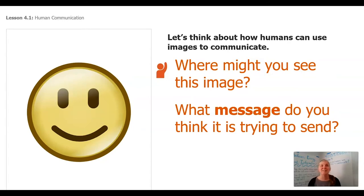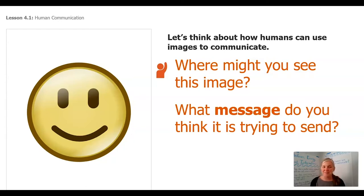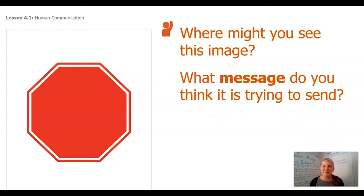Let's think about how humans can use images to communicate. Where might you see this image here? What message do you think it's trying to send to you? I think we all recognize this one — is it saying that it's happy? Is it saying that it's sad? Yeah, I think we all know it's happy. Where might you see this one? What message do you think it's trying to send? We all know that this bright red sign is sending us the message to stop. You may have seen it while driving with your parents or walking down the street.